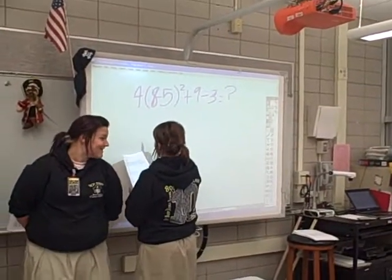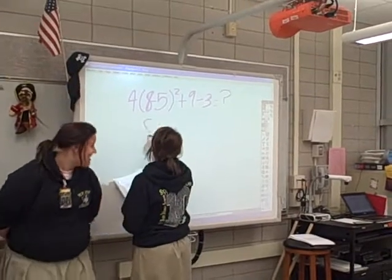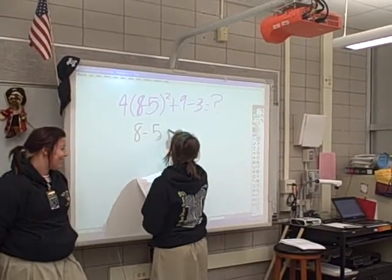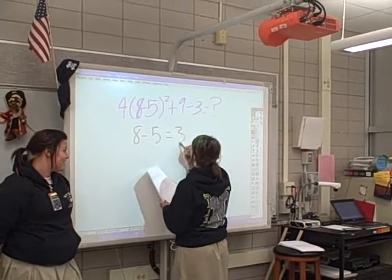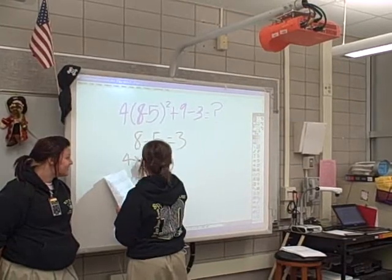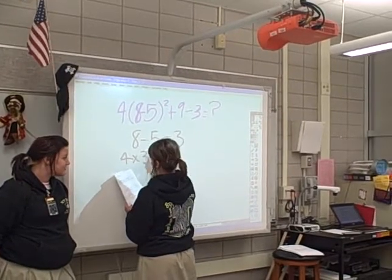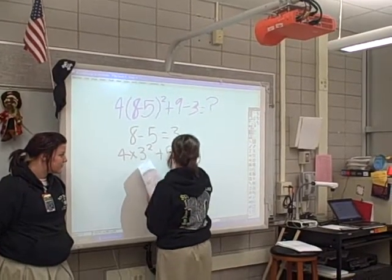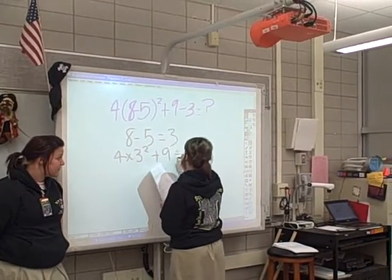Step one, you have to work inside the parentheses. Eight minus five equals three. So now it's four times three squared plus nine divided by three.